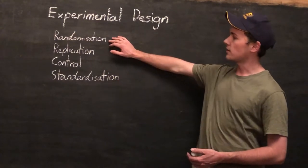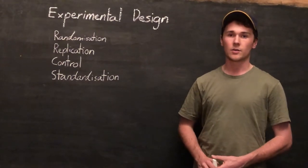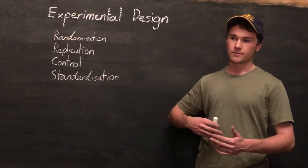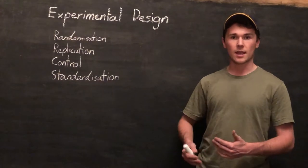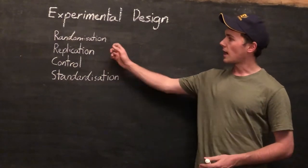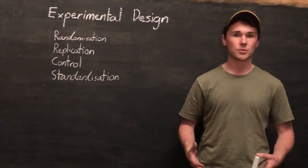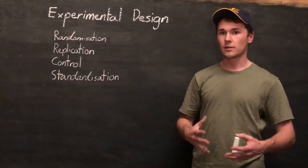But randomization, so this is making sure that we're not bringing any bias into our experiment. So making sure that every time we select something or any time that we have a say in the experiment itself it's under a random selection process.